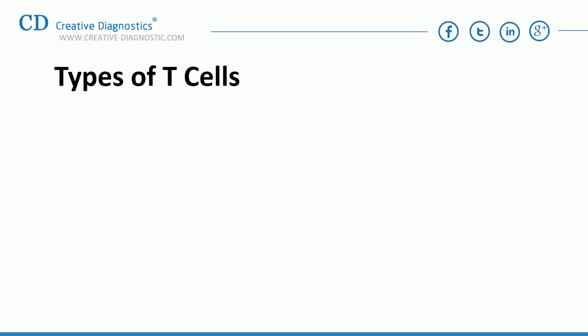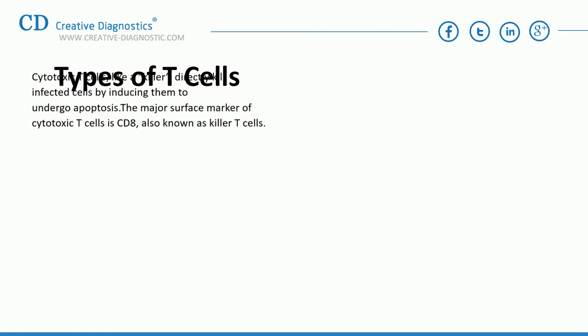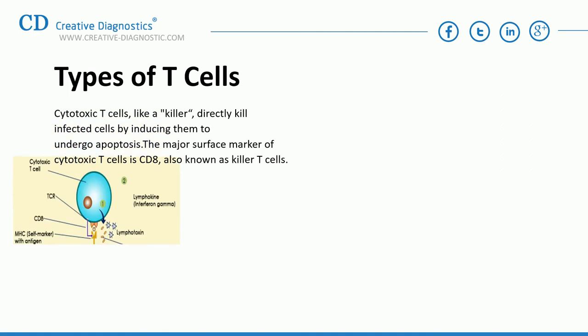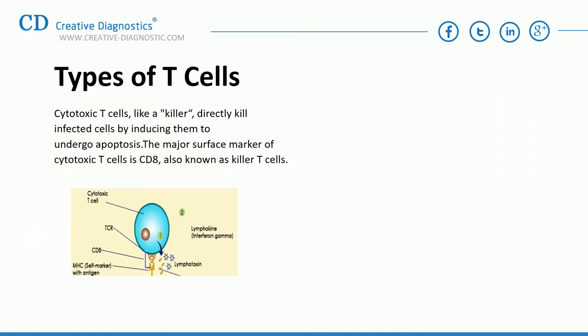According to their function and surface markers, T-cells can be divided into four main classes. First, cytotoxic T-cells — like a killer — directly kill infected cells by inducing them to undergo apoptosis. The major surface marker of cytotoxic T-cells is CD8; they are also known as killer T-cells.